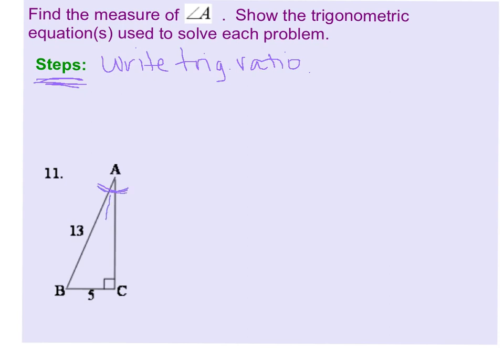And you'll notice what you're given is the opposite side and the hypotenuse. We know 13 is the hypotenuse because it's across from the 90 degree angle. So if we are given the opposite leg and the hypotenuse, we know that that is sine. So I'm going to write sine of angle A equals opposite, which is 5, over hypotenuse, which is 13. So that's your first step, to write the trig ratio.